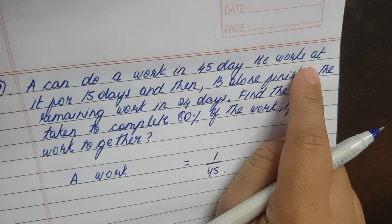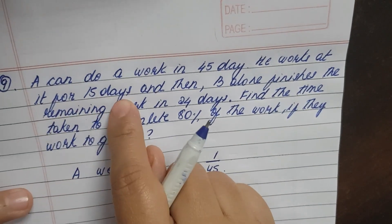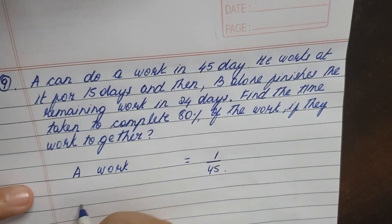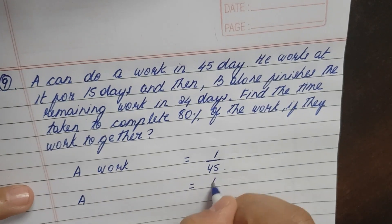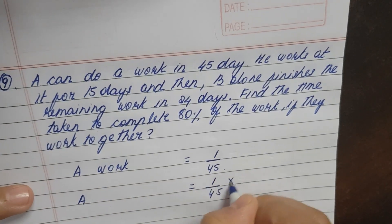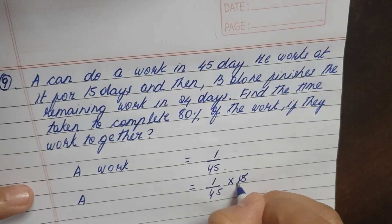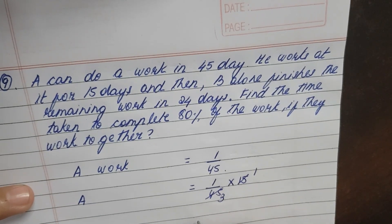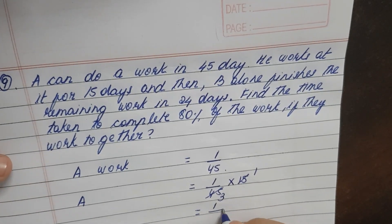He works at it for 15 days. So A in the 45 days work, 15 days is trying to complete. 15 is 1 time, 45 is 3 times. So it is 1 by 3.